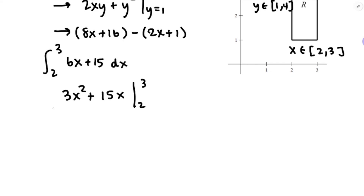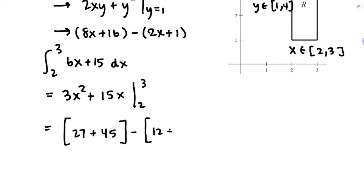X runs from 2 to 3. That would be 3 times 9 is 27 plus 45, minus what I got when I plugged in 2: 3 times 4 is 12 plus 30. So 72 minus 42 is going to equal 30.